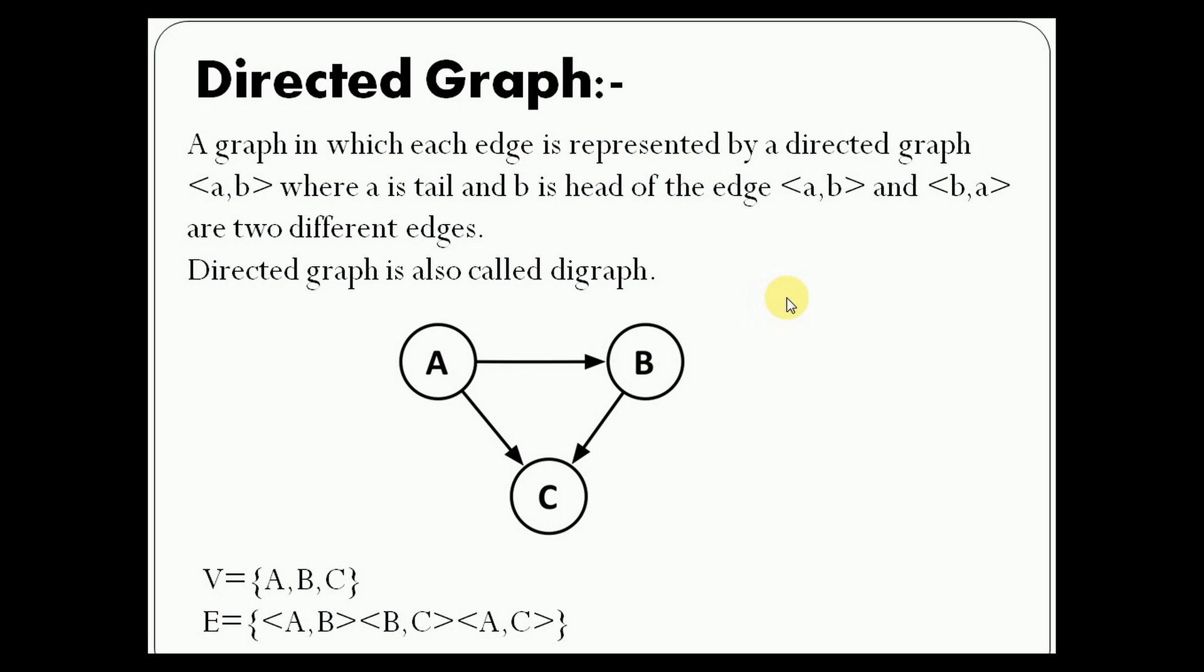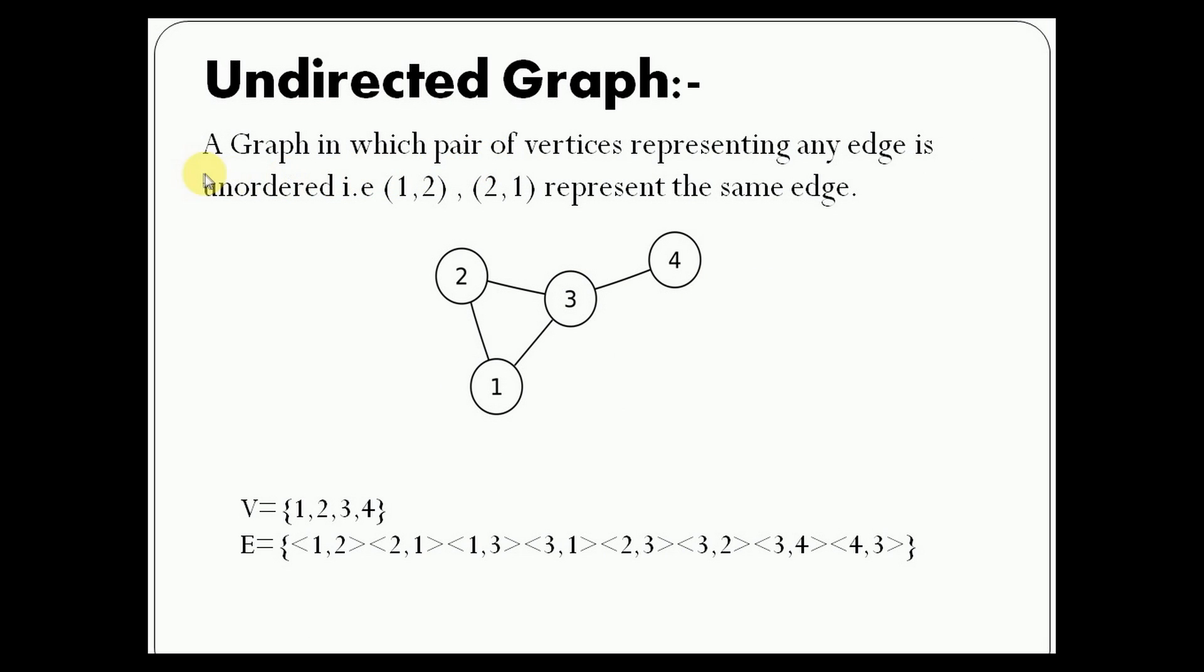An undirected graph is a graph in which the pair of vertices representing any edge is unordered. That is, edge 1,2 or 2,1 represent the same edge. There is no direction, it's bidirectional.